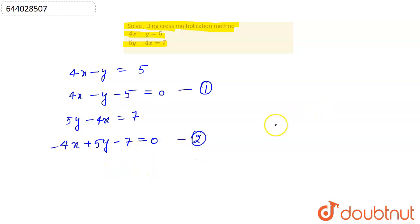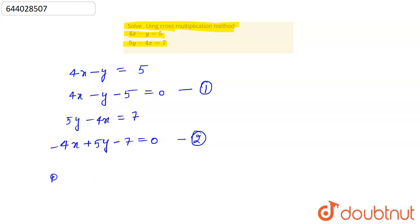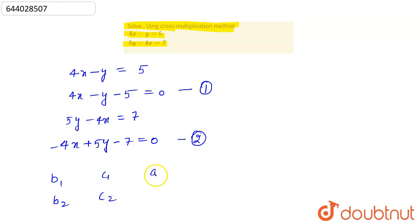Now we know how to apply the cross multiplication formula. To apply it, we use the coefficients: b1, b2, c1, c2 for x; c1, c2, a1, a2 for y; and a1, a2, b1, b2 for the denominator.